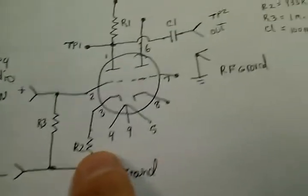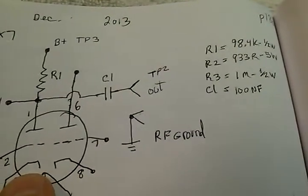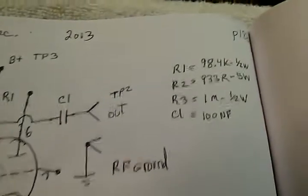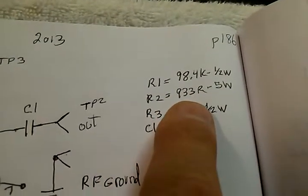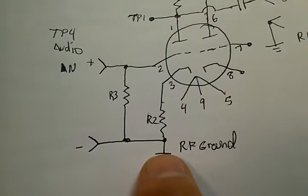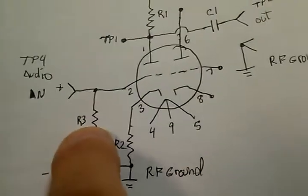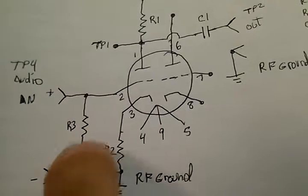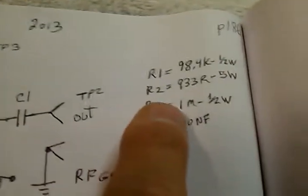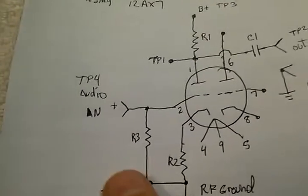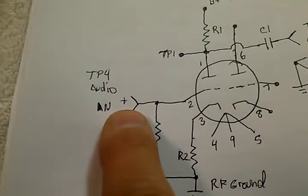R2 right here is for the automatic bias, about 1000 ohms, 5 watts, going to RF ground. R3 is the grid leak resistor, running one meg, half a watt or quarter watt would be fine. Audio frequency in right over here, right into the grid.